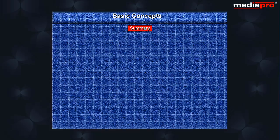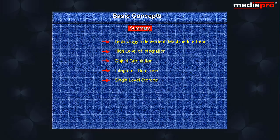With this we have come to the end of this chapter. In this chapter we have looked at some of the important features of the AS400: technology-independent interface, a high level of integration, object orientation, integrated database, and single-level storage. We also saw the basic concepts of the AS400 architecture such as objects, libraries and library lists. Finally, we also saw the integrated file system — a unique concept that allows multiple file structures to co-exist together.